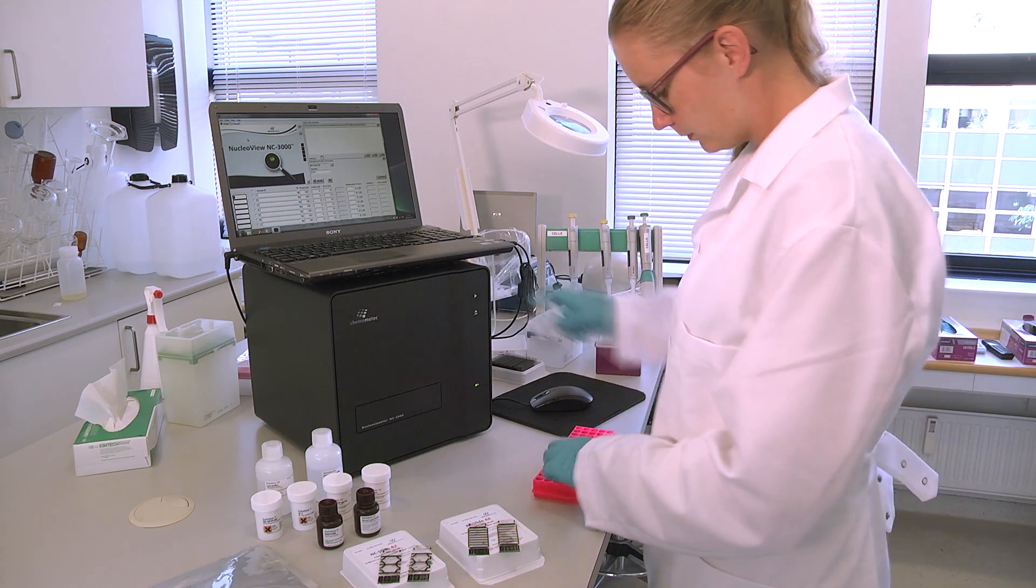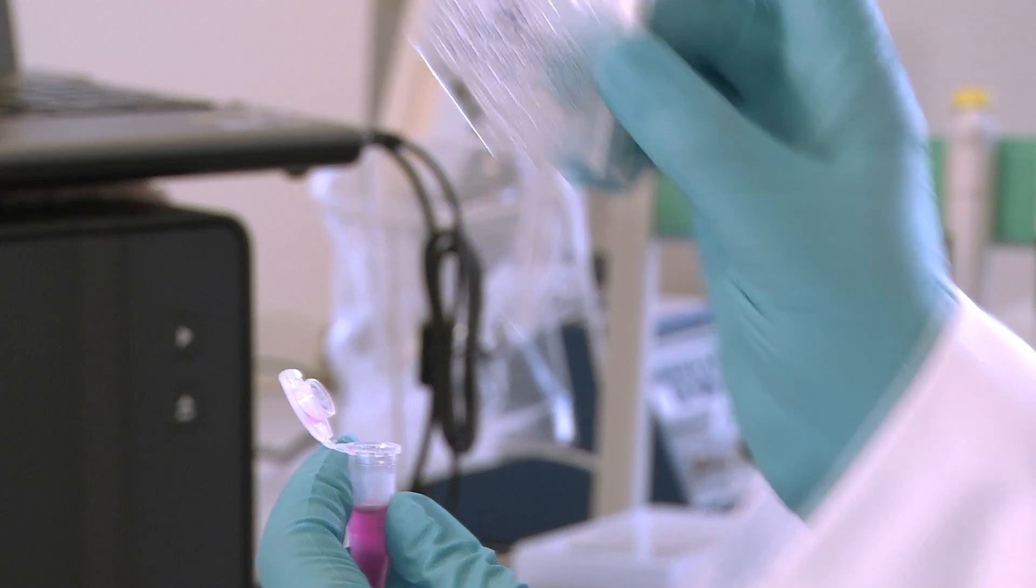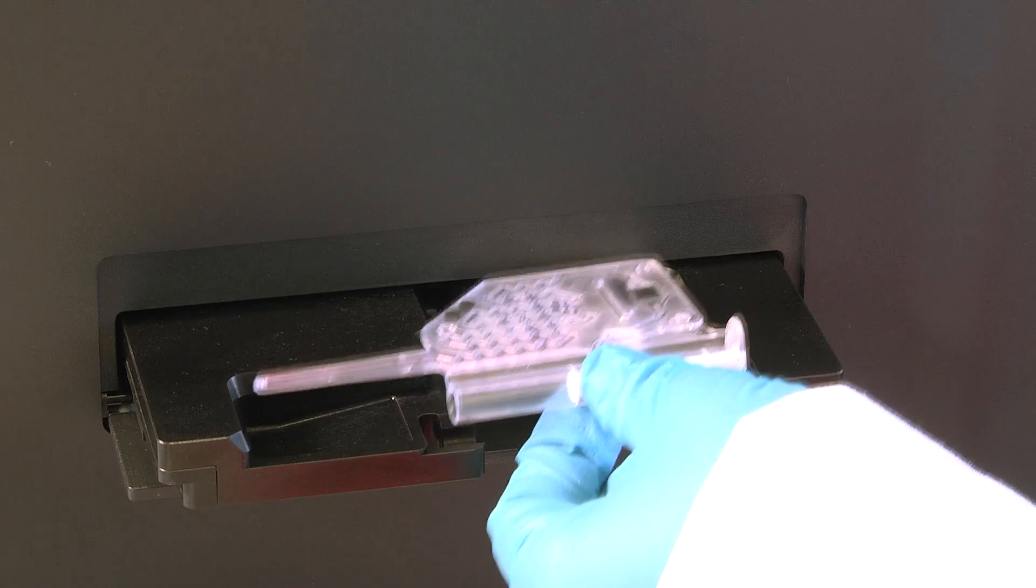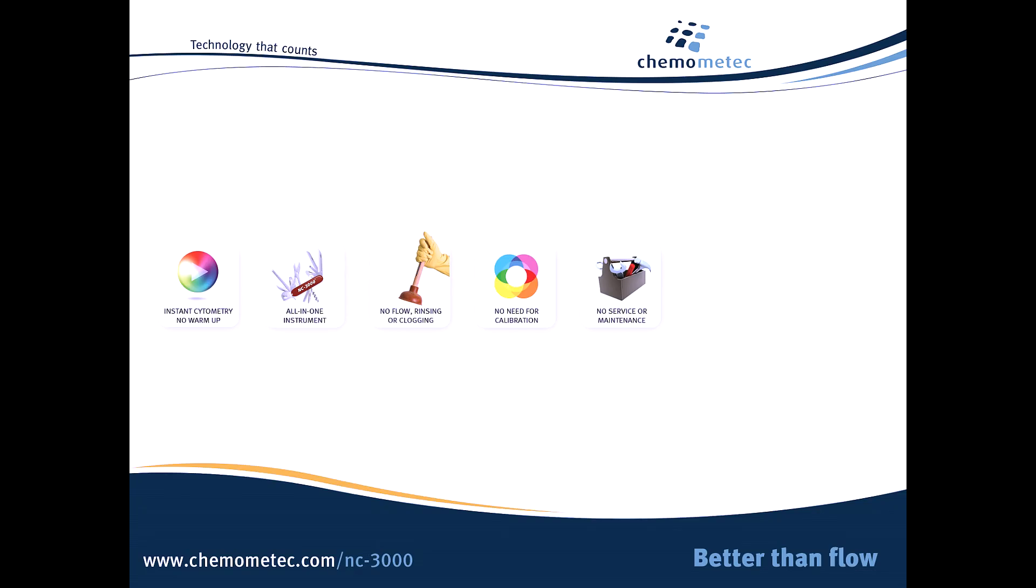For high-speed cell counting, the VIA1 cassette provides a one-step cell count without pretreatment. The slides give you the flexibility to perform up to 8 cell counts in less than 3 minutes.